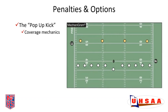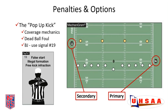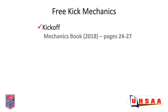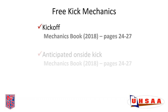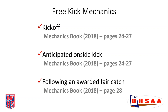The primary coverage area for the pop-up kick: the back judge will have primary coverage and the line judge secondary coverage in a five-man mechanic. This is a dead ball foul — the signal is given by the back judge following the enforcer, prior to the march-off of the yardage using signal 19. There are three types of mechanics we'll use on free kicks: for a kickoff, found in the mechanics book on pages 24 to 27 for a five-man crew — including the anticipated onside kick mechanic. If it's a kick following an awarded fair catch, there's a special mechanic found on page 28, though this one is rare.